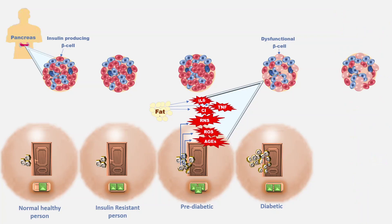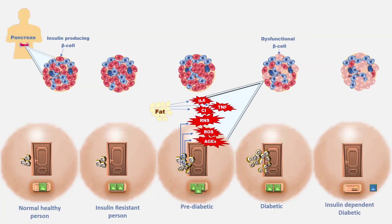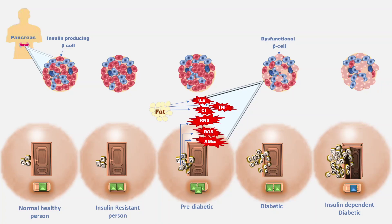If a person still does not change his lifestyle, these metabolic and biochemical stresses and insulin resistance continue to damage more and more beta cells, until the stage comes when the leftover beta cells can hardly make insulin. At this stage, the person needs injectable insulin. For insulin-dependent diabetics, after meals the blood sugar level rises and this injectable insulin binds to the receptor. However, insulin resistance is at an all-time high, so even injectable insulin fails to keep blood sugar in the normal range.